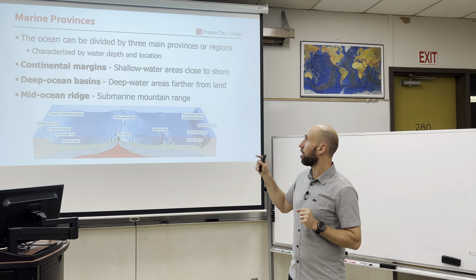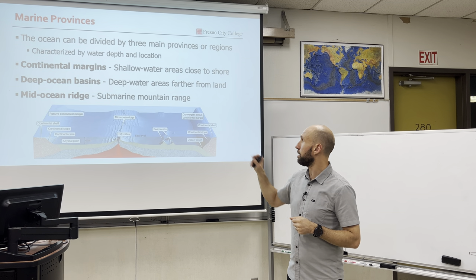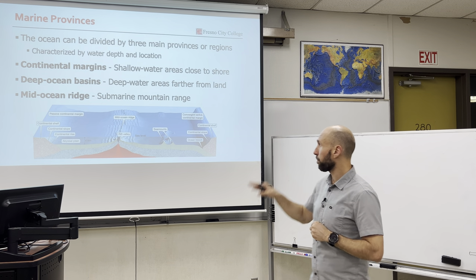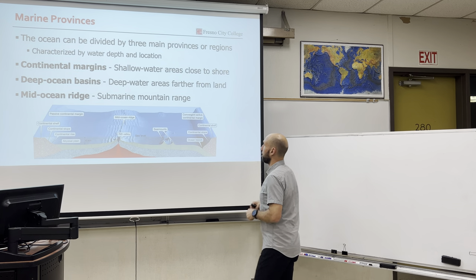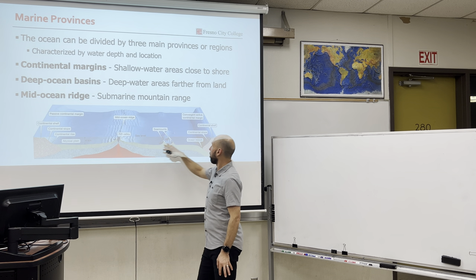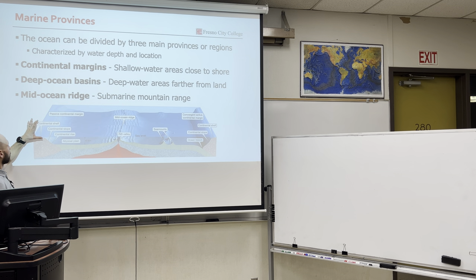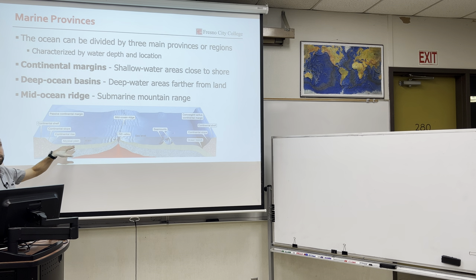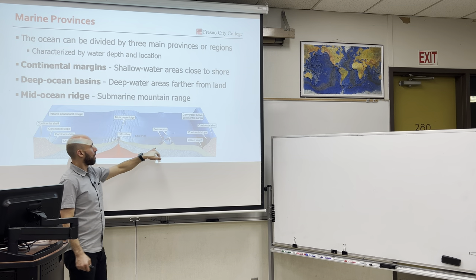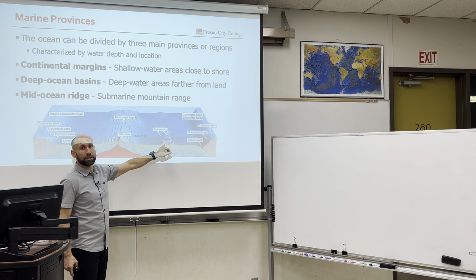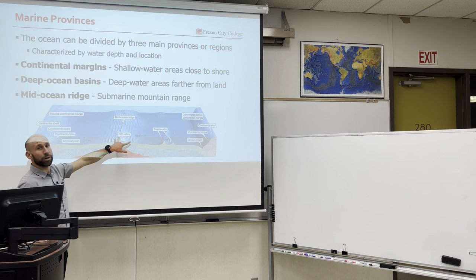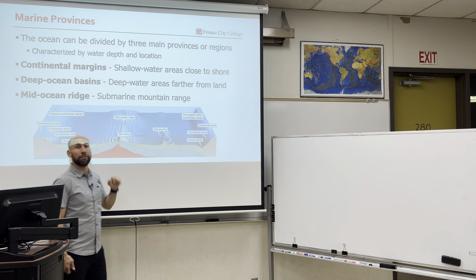Marine province number one: continental margin. Marine province number two: deep ocean basin. Marine province number three: mid-ocean ridge. Here's a diagram of our three marine provinces. Continental margins are composed of features: continental shelf, shelf break, continental slope, and continental rise. Deep ocean basins have the flattest places on earth — the abyssal plain — also characterized by underwater volcanic features such as seamounts and guyots. And then we have the mid-ocean ridge system, a tectonic boundary composed of an elevated profile with a rift valley in the middle.